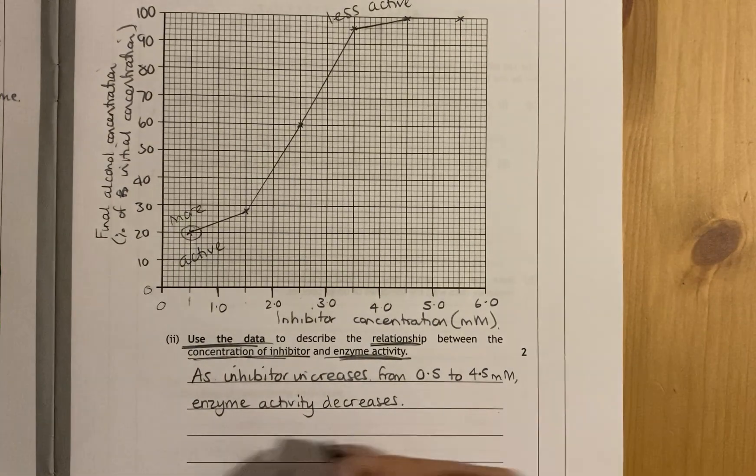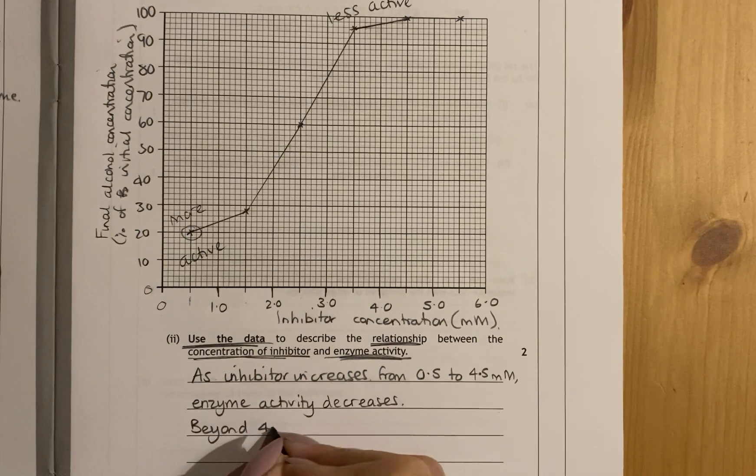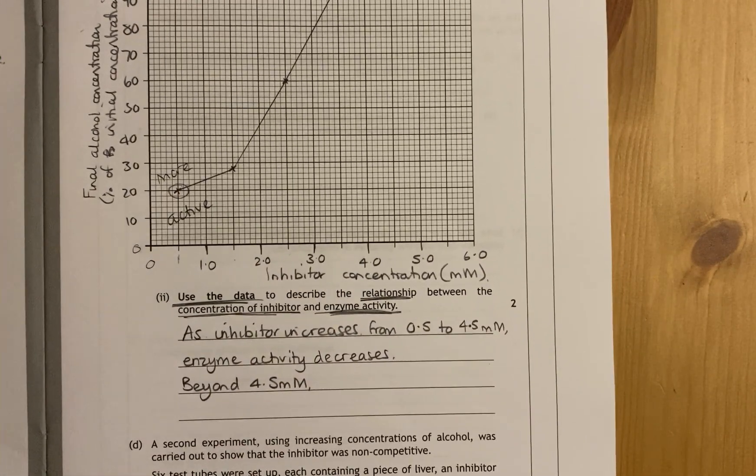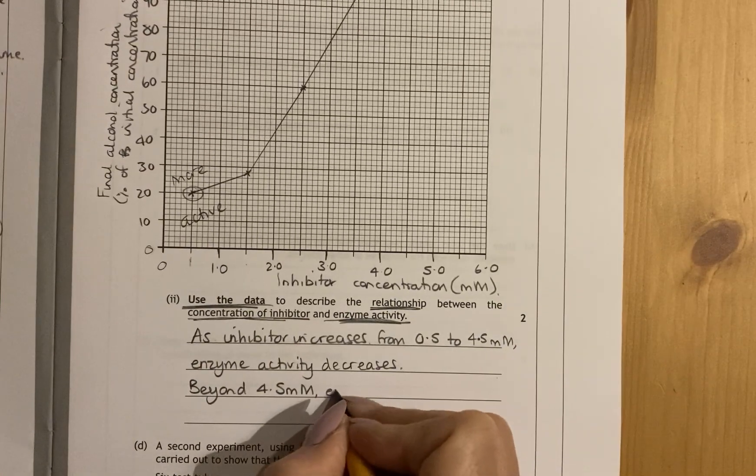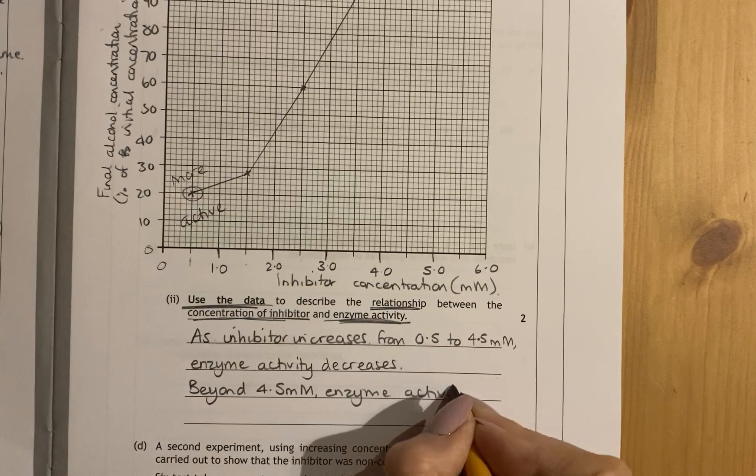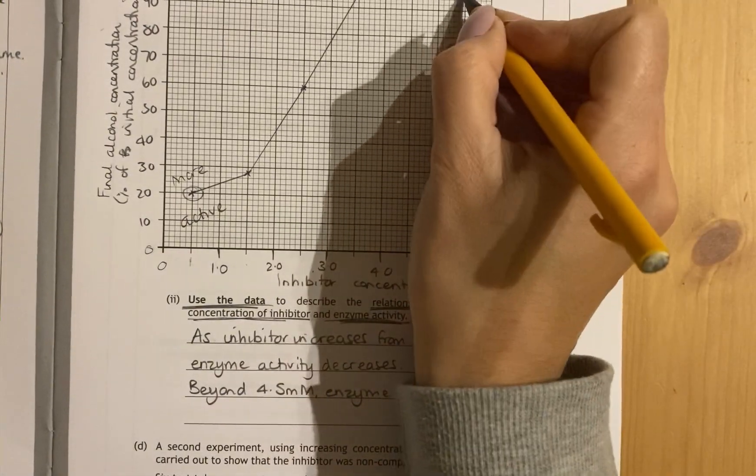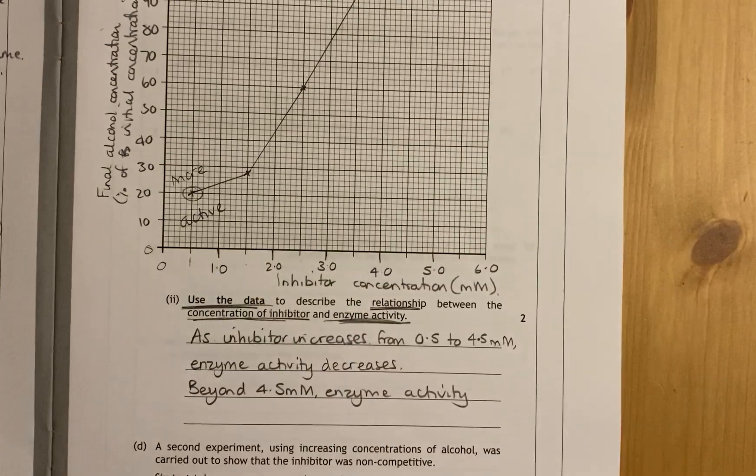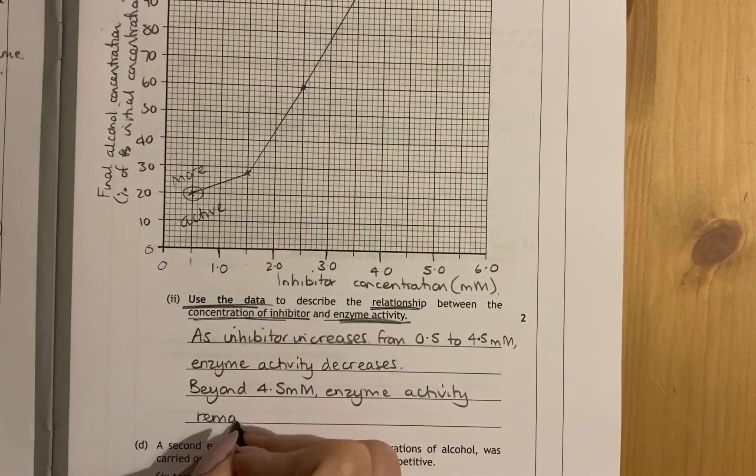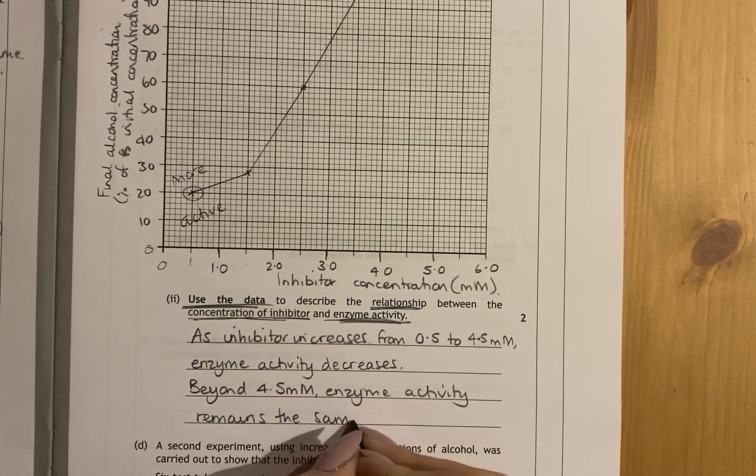Now, beyond the next point, so beyond our 4.5, we have to make a statement about enzyme activity. So, if we look at this from beyond 4.5 to here, enzyme activity remains the same. It's not dropping or it's not increasing. It's remaining the same.